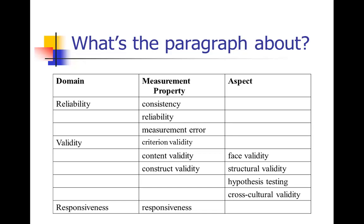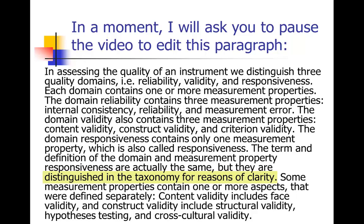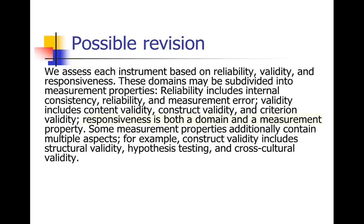I used that framework to help myself edit this paragraph. We don't need a lot of words to give this taxonomy. I pared it down to: we assess each instrument based on reliability, validity, and responsiveness. These domains may be subdivided into measurement properties. Reliability includes three measurement properties. Validity includes three others. And responsiveness is both a domain and a measurement property — they had a long explanation in the original where they said that for reasons of clarity the domain and measurement property have the same name, which actually made it more confusing. Then: some measurement properties additionally contain multiple aspects — for example, construct validity includes structural validity, hypothesis testing, and cross-cultural validity.